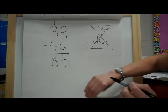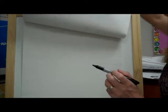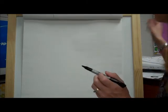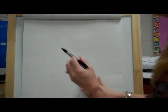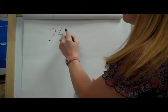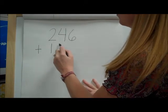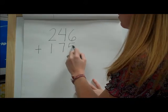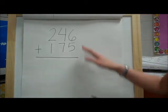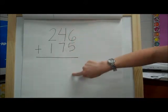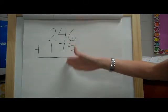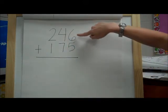All right, let's go on to another problem. All right, now we're going to start with three-digit problems. So we're going to do two hundred forty-six plus one hundred seventy-five. Okay, so you see how I've lined up my numbers here so that the places are all lined up.